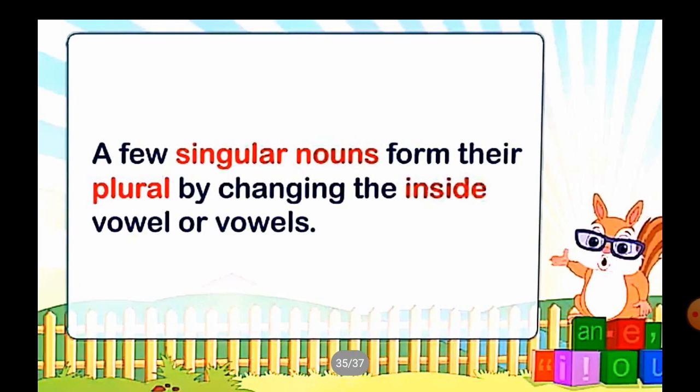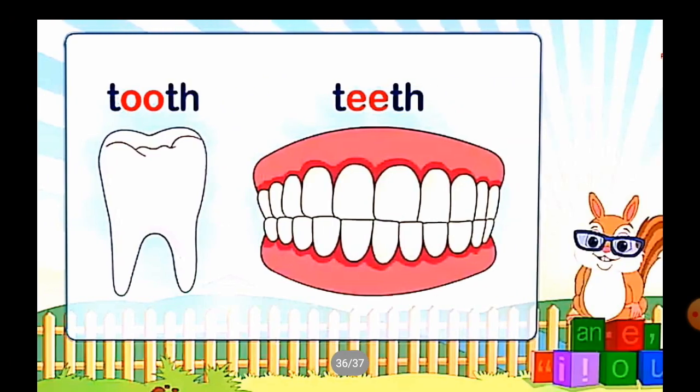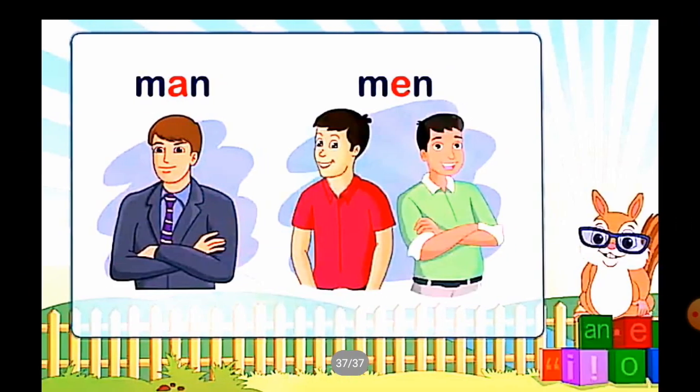Some singular nouns form the plural by changing the inside vowel. For example: 'Tooth' — it has a double O vowel, which changes to double E in the plural, so 'tooth' becomes 'teeth'. 'Man' — the vowel A changes to E in the plural, so 'man' becomes 'men'.